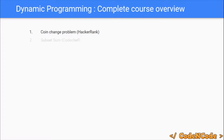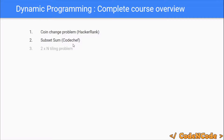The second problem is the subset sum problem. You are given an array and also a sum, and you have to tell whether there exists a subset from the given array such that the sum of the subset is equal to that number or not. We would be taking a problem from CodeChef and applying the subset sum algorithm on that.